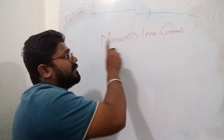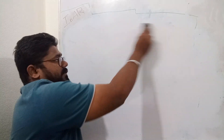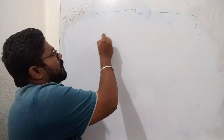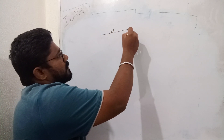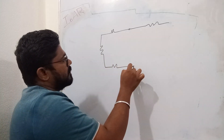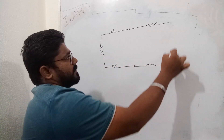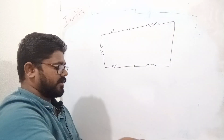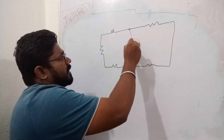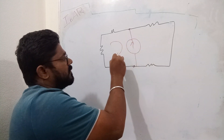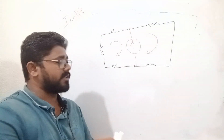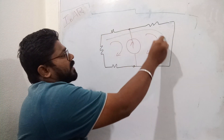Super-mesh analysis is a special case of Maxwell's loop current method. Let us say we have a planar circuit, but this planar circuit has an independent current source placed in between two meshes. In that case, we go for what is called Maxwell's loop current method.